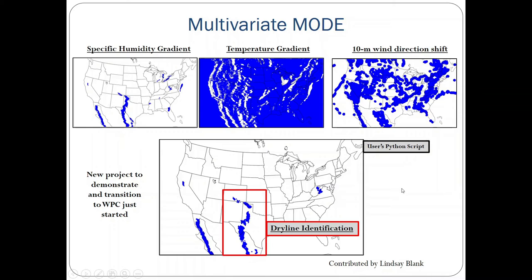One of the more exciting additions to MET 10.0.0 was multivariate MODE, which is basically an extension of MODE to include two or more fields to identify complex features that require more than one variable to define. This shows how specific humidity gradients, along with temperature gradient and the 10-meter wind shift, were all combined into a super object to identify a dry line. This is a project we have written a follow-on proposal for that has been funded, and we'll be working with WPC over the next two years to refine this capability.